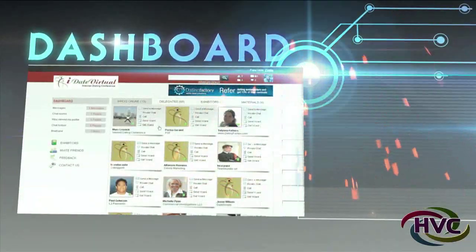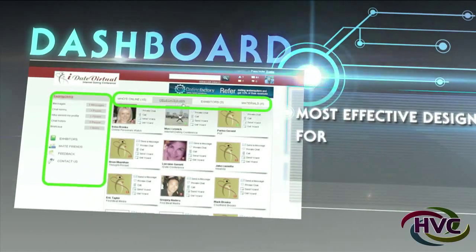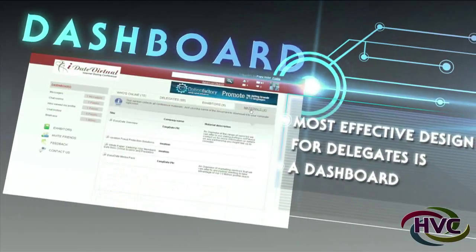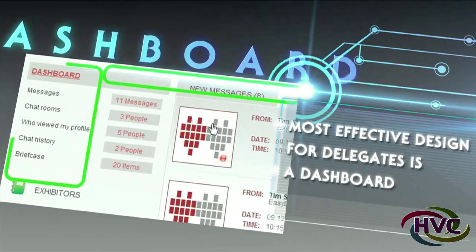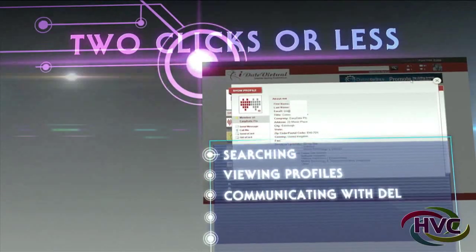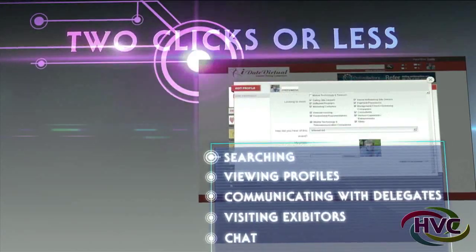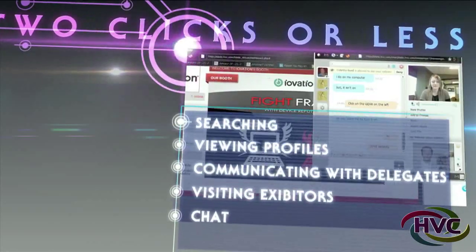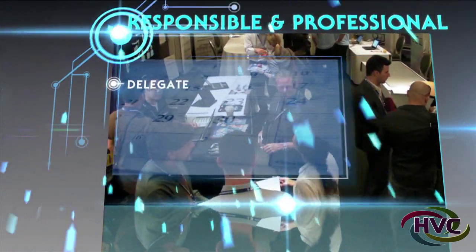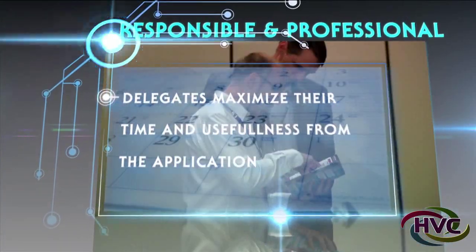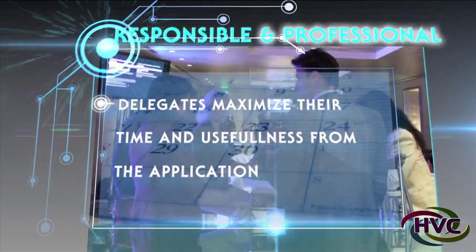The application has many functions. A dashboard — we've tested virtual event user experiences and found the most effective design for delegates is a dashboard. Your delegates are less than two clicks away from their needs, be it searching, viewing profiles, communicating with other delegates, visiting exhibitors, chat and more. Your delegates maximize their time and usefulness from the HVC application. It also makes you as the organizer look responsible and professional to your industry.